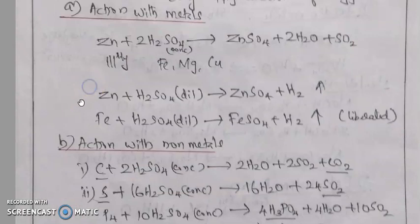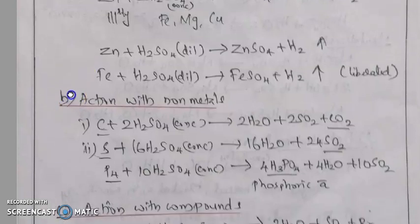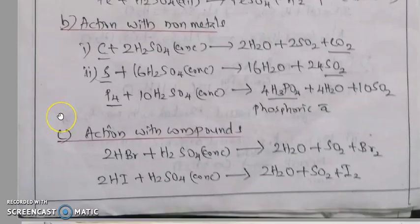Next, dilute sulfuric acid reactions. Dilute H2SO4 reacts with metals — for example, with iron: FeSO4 and H2 are liberated. Then, action with non-metals: carbon, sulfur, and phosphorus react with concentrated sulfuric acid.